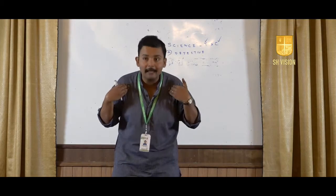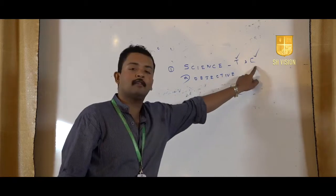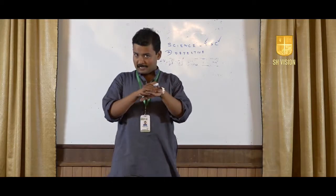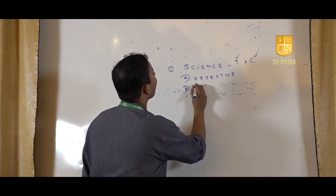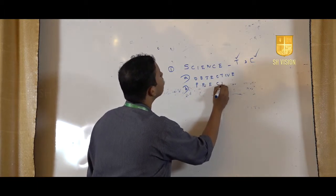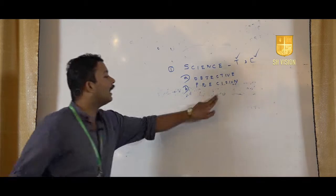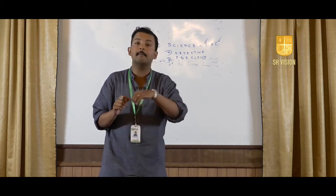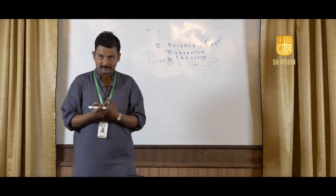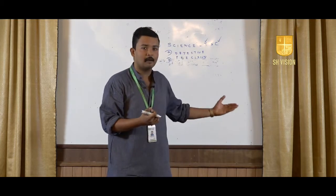Objectivity means my personal opinion or your personal opinion should not color the development of theories and concepts. Rather, it should happen in an independent manner. The second characteristic is precision. A subject should be precise — there should be a substantial degree of precision in any branch of knowledge. It explains issues in detail without leaving any part and connects them with the larger reality.